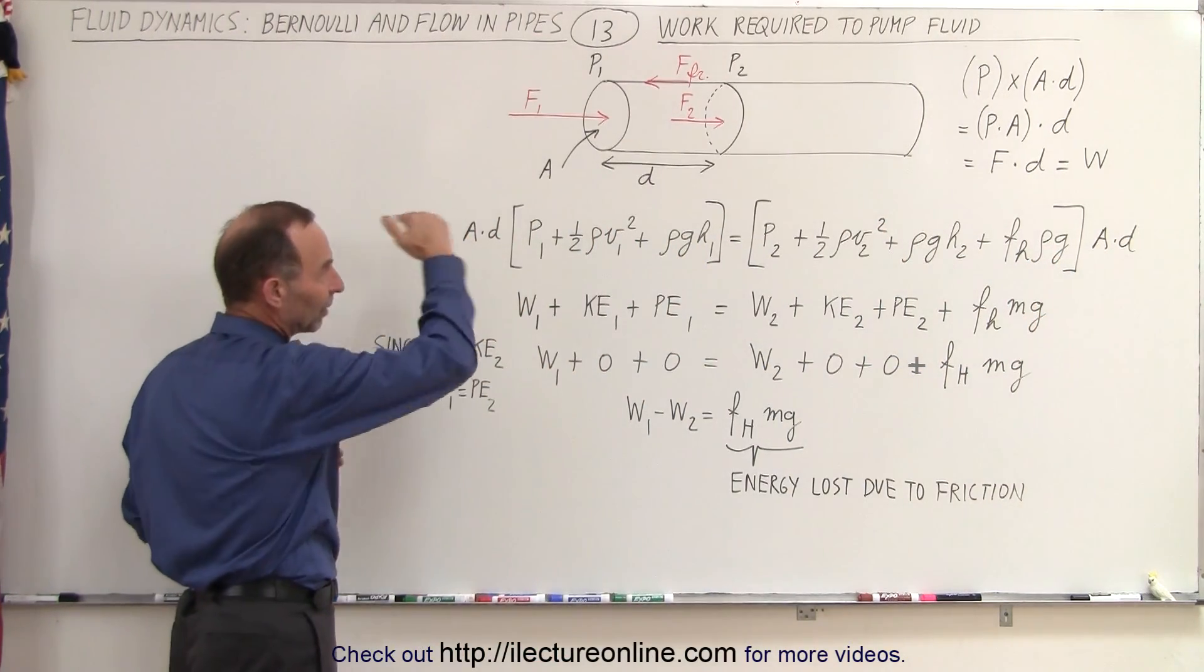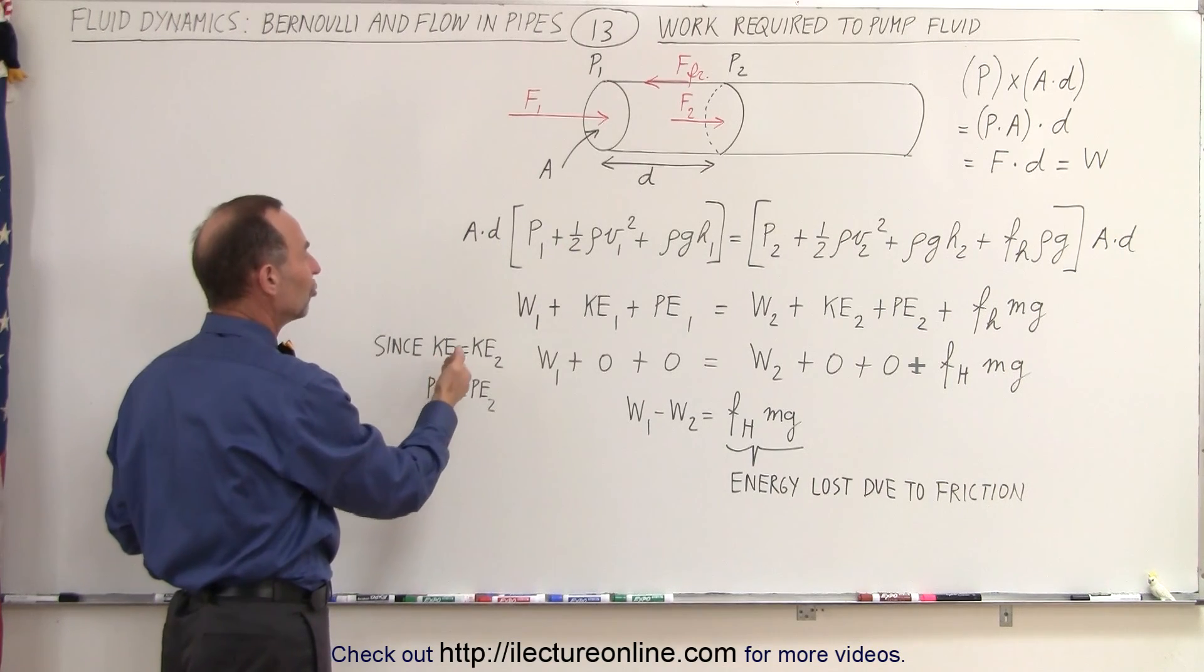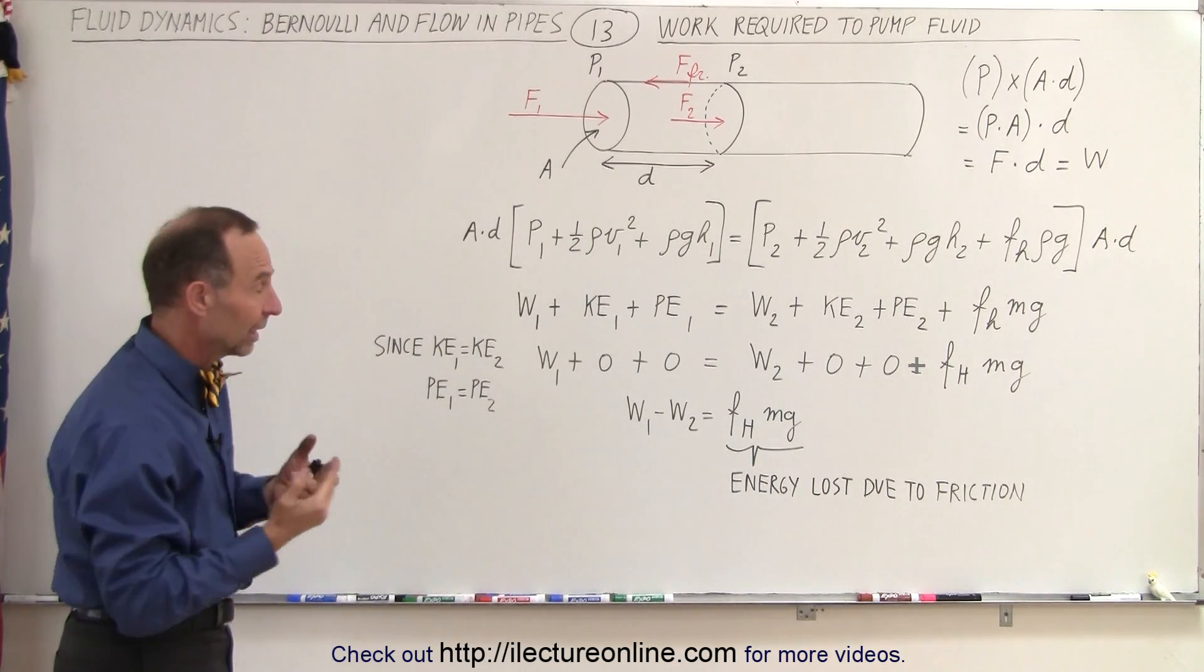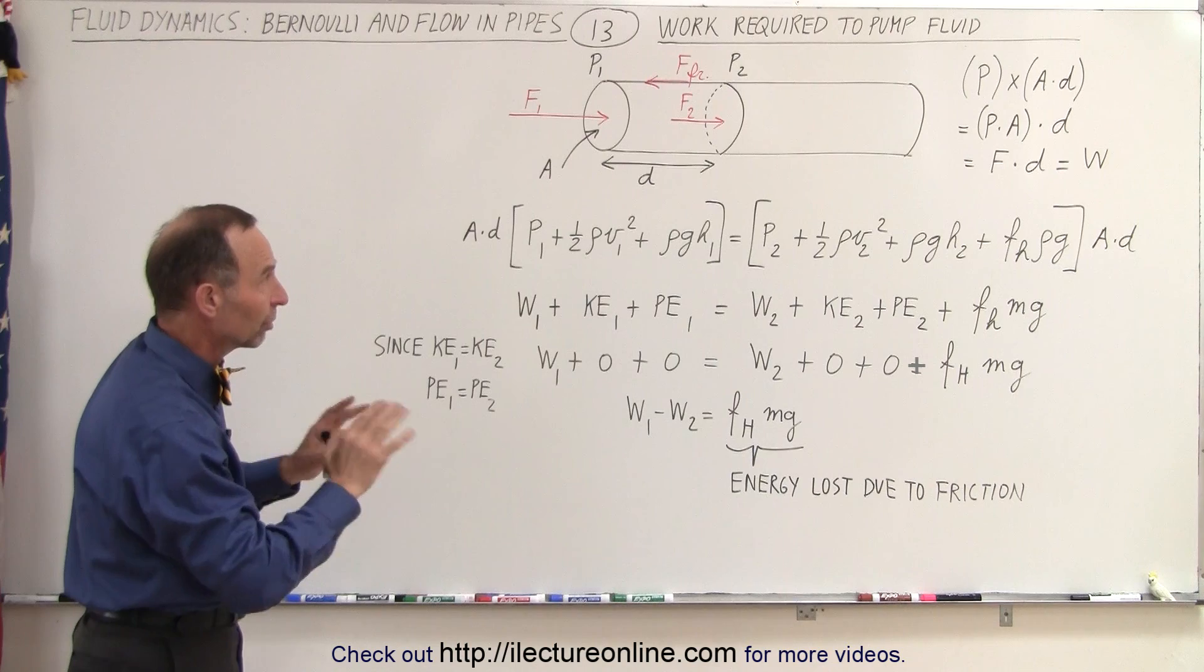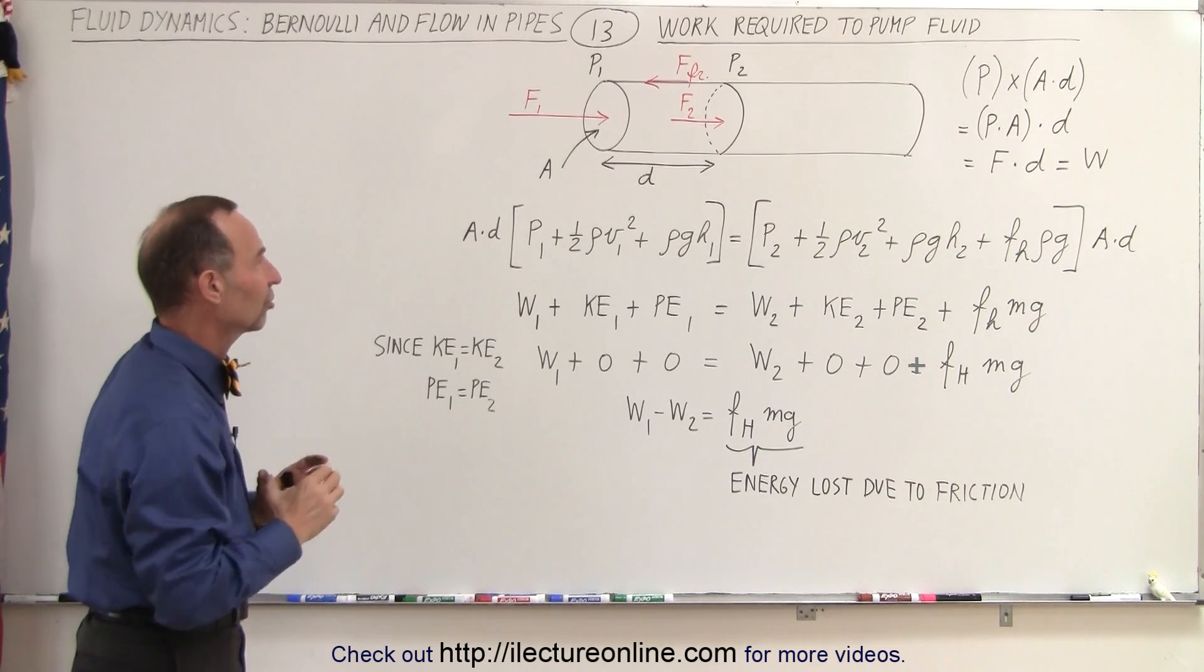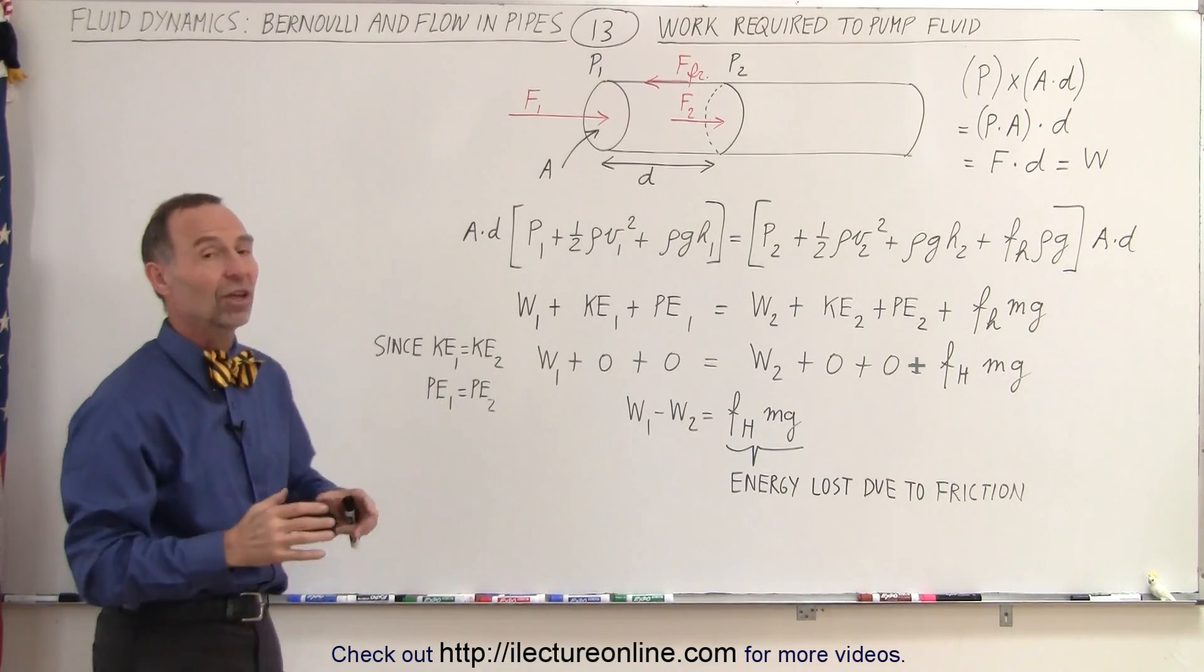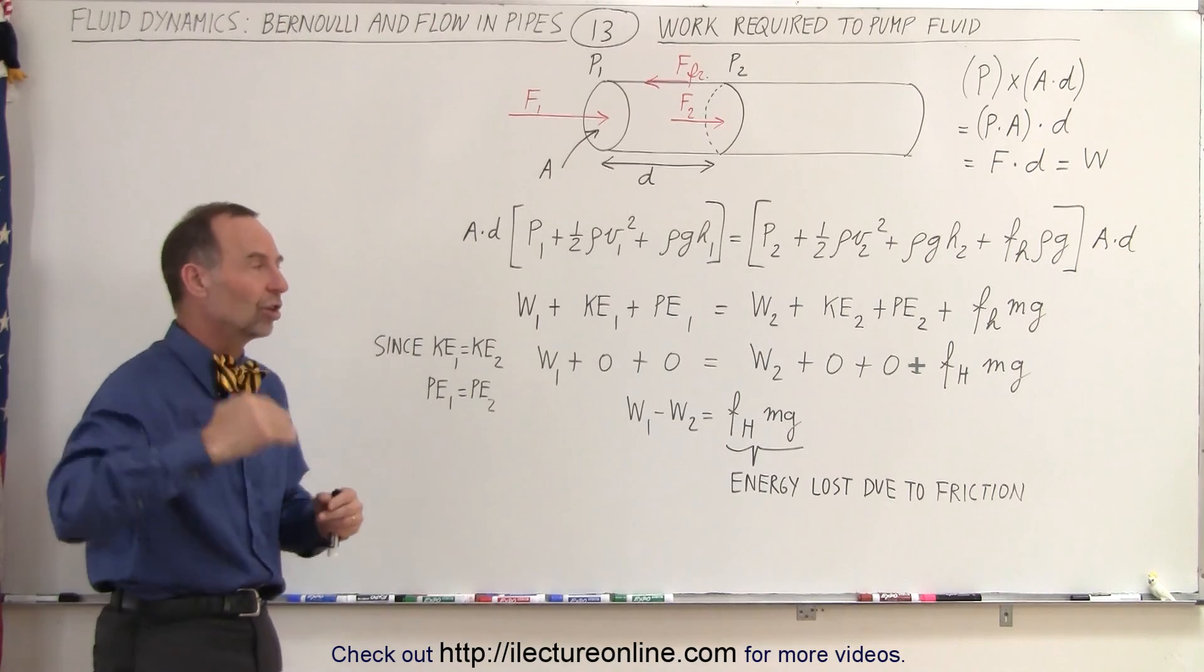Now since if we have a level pipe the kinetic energy will remain the same so kinetic energy one equals kinetic energy two because the velocity doesn't change if the cross-section area doesn't change and the potential energy remains the same since there's no change in height.